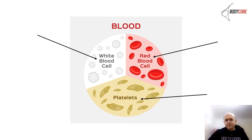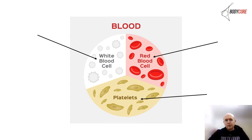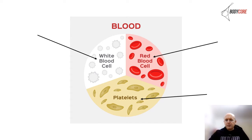Blood itself is made up of white blood cells, red blood cells, platelets, and plasma. The red colour comes from a red pigment — when a red cell is saturated with oxygen, it becomes brighter. Red cells contain a substance called haemoglobin, a protein, and that's what carries oxygenated blood around the body.